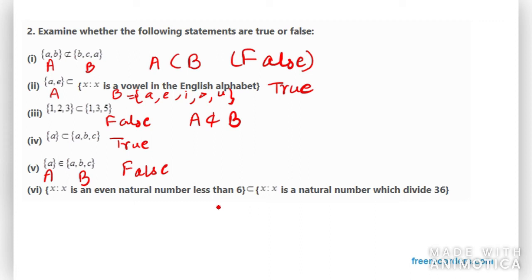Now the sixth one says {x: x is an even natural number less than 6}. So what this set be? It should be less than six and it should be an even number. So it should be two, four, and that's all.